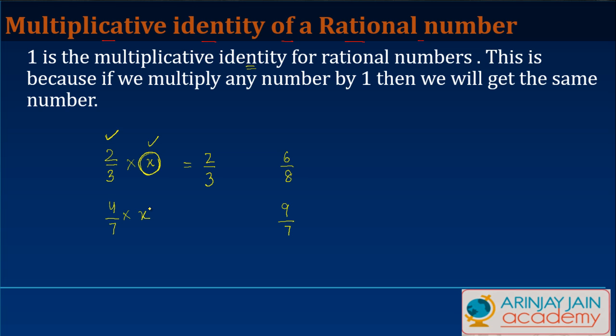Similarly, for 4 by 7, what should be the number through which I should multiply this such that the result comes as 4 by 7? Now, you must be thinking this is so easy.